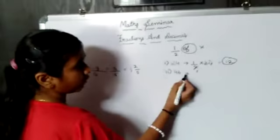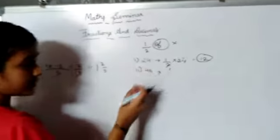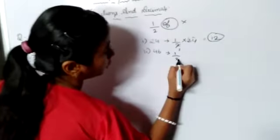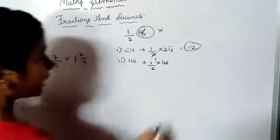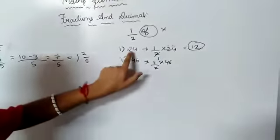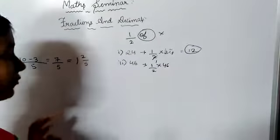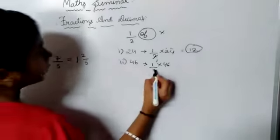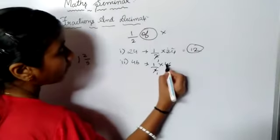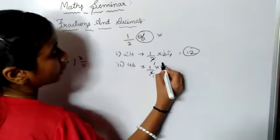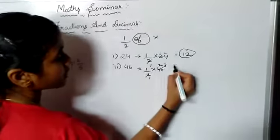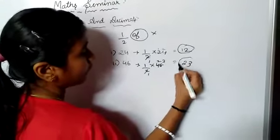Next, for 46, we solve the same way: 1 upon 2 into 46. Because the number is 46 we take 46. Cancelling: 2 ones are 2, 2 twos are 4, 2 threes are 6, so 23 ones are 23. The answer is 23.